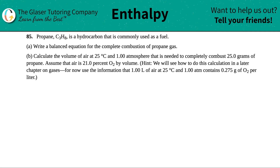Number 85: propane, which is C₃H₈, is a hydrocarbon commonly used as a fuel. Letter A: write a balanced equation for the complete combustion of propane gas. We've done tons of problems in the previous chapter about how to balance equations. We're doing a combustion reaction, so we have to have a hydrocarbon — we're using propane — so we start with C₃H₈, and they tell us it's a gas.